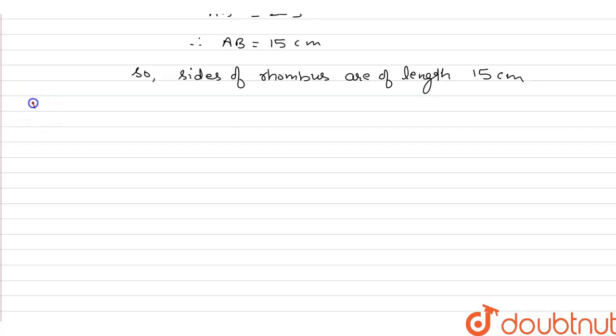Third part, we want to find perimeter of rhombus. Perimeter of rhombus is 4 into side, because all four sides are equal. That means 4 multiply 15, which is equal to 60 centimeter.